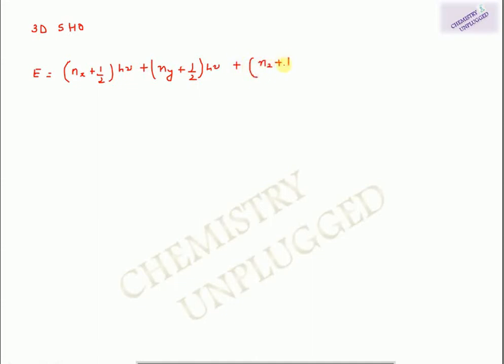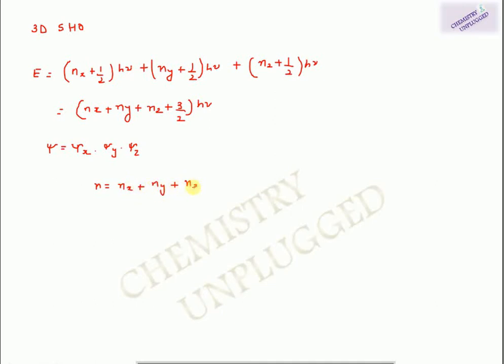For the 3D simple harmonic oscillator, the energy value is E = (nₓ + ½)hν + (nᵧ + ½)hν + (nz + ½)hν = (nₓ + nᵧ + nz + 3/2)hν. The wave function is ψ = ψₓ · ψᵧ · ψz. The degeneracy for 3D SHO is calculated using the formula g = (N+1)(N+2)/2, where N = nₓ + nᵧ + nz.